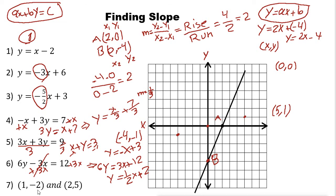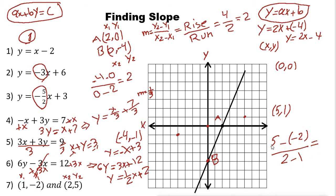If you have two points, use the formula m = (Y2 − Y1) / (X2 − X1). Let's say X1 = 1, Y1 = −2, X2 = 2, Y2 = 5. Then slope = (5 − (−2)) / (2 − 1) = (5 + 2) / 1 = 7 / 1 = 7. So the slope of the line passing through these two points is 7.